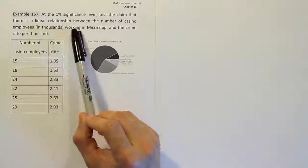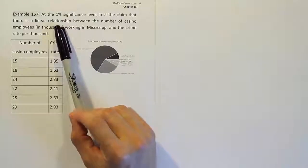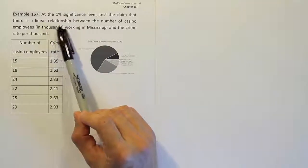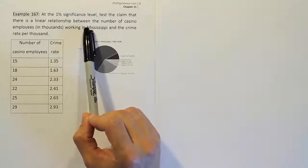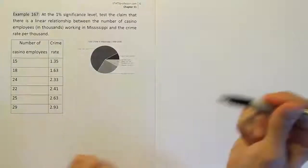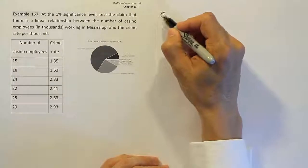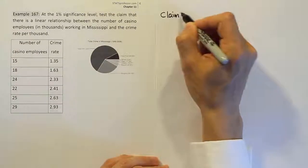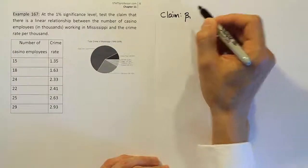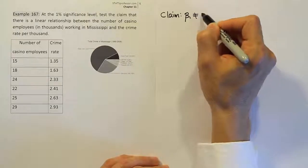Let's talk about this claim. It says test the claim that there is a linear relationship. It doesn't say positive, it doesn't say negative, it just says there is a relationship. So that means that the slope is not equal to zero. So that's going to be our claim, that the slope β₁ is not equal to zero.